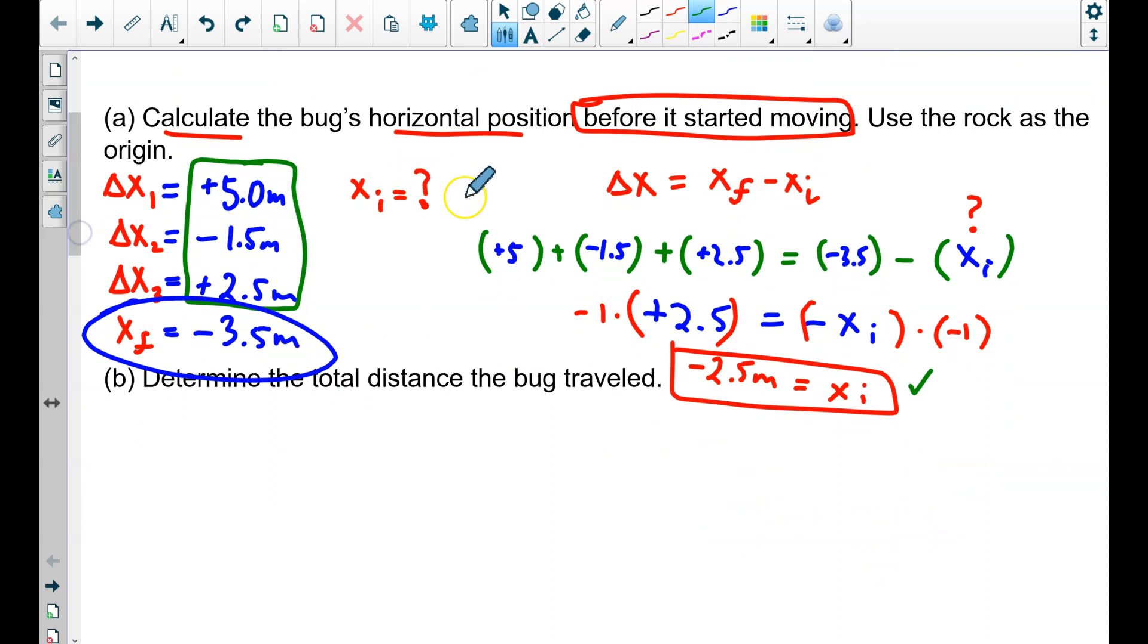That's how we calculate the displacement. The distance is almost the same calculation, d total. The only difference is, when we add up the different distances, can distance be negative? No, it cannot. You might recall that we do not let distance be negative. We add the three values once more, but every single one, whether it's 5 or 1.5 or 2.5, they should all be positive.